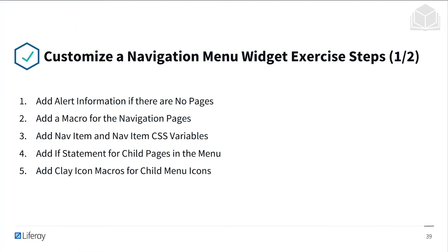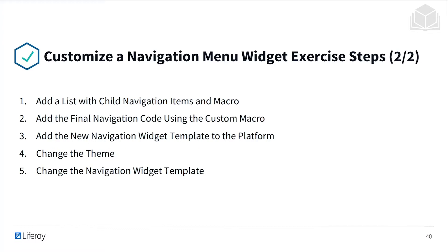Here are the steps we'll be taking in today's exercise. First, we'll add alert information if there are no pages. Then we'll add a macro for the navigation pages, add a nav item and the nav item CSS variables, add an if statement for child pages in the menu, add clay icon macros for child menu icons, add a list with child navigation items and macro, as well as the final navigation code using the custom macro. Then we'll add the new navigation widget template to the platform, change the theme, and change the navigation widget template.